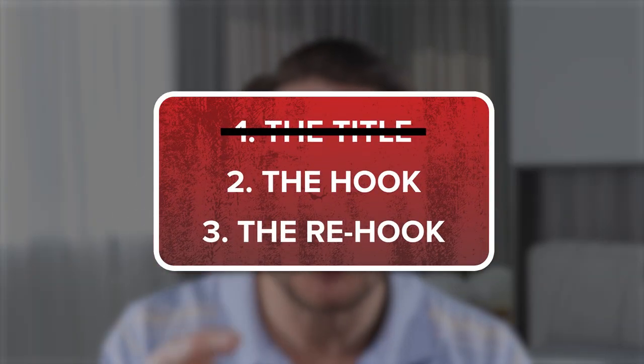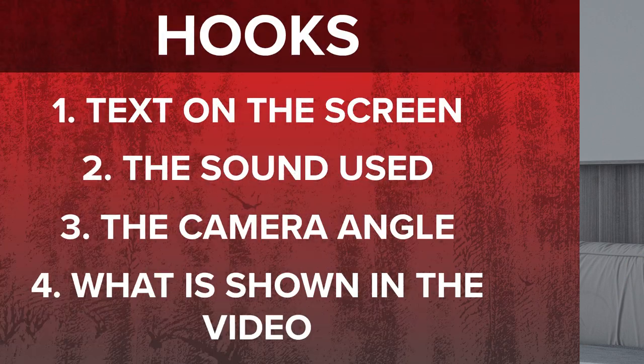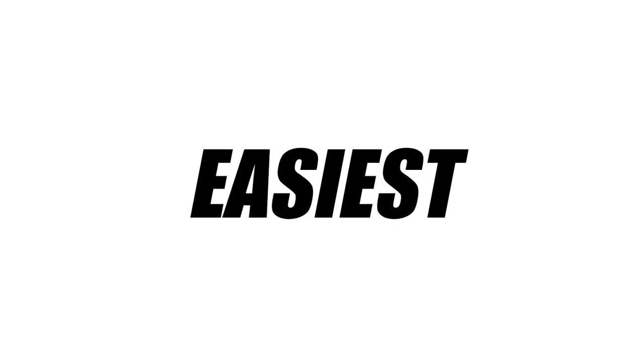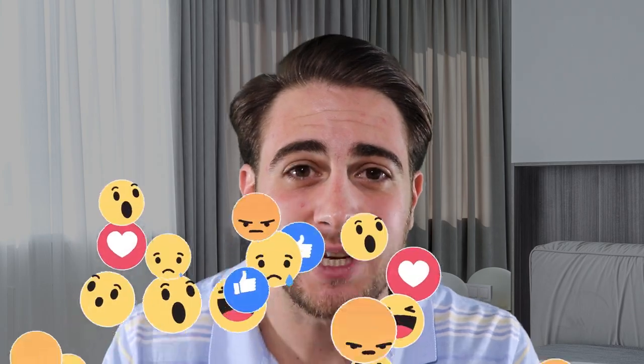If nobody clicks on the video, nobody views the video. Please spend a ton of time on the title and the thumbnail. You need to make sure you're paying attention to the hook and the re-hook. The hook can be done in several different ways: with text on the screen, with sound, with the camera angle, or with what you're actually showing in the video. One of the easiest ways to re-hook people in on YouTube Shorts is to add subtitles or animated text to everything going on in the video. You also need to make sure you're adding emojis into both your title and the re-hooks.